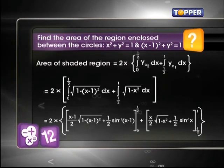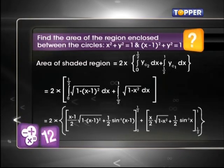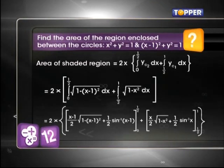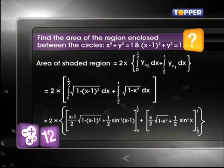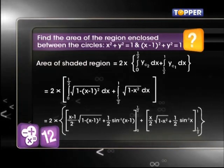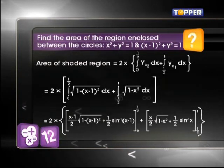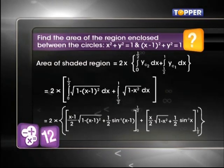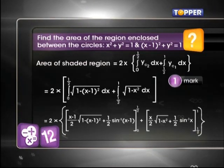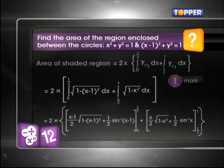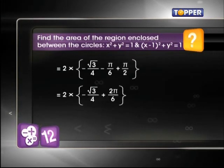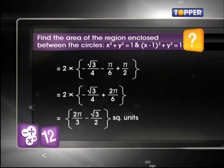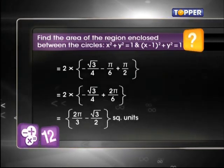The enclosed area is symmetric on both sides of x-axis. So, it is twice the shaded area which is equal to 2[∫yc2 dx from 0 to 1/2 + ∫yc1 dx from 1/2 to 1]. On integrating with respect to x and putting the limits of integration, we get the required result: (2π/3 - √3/2) square units.